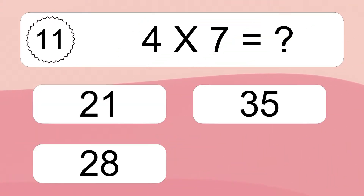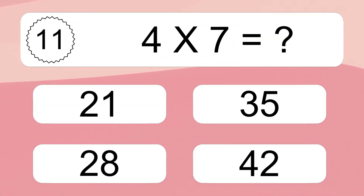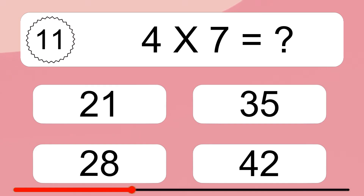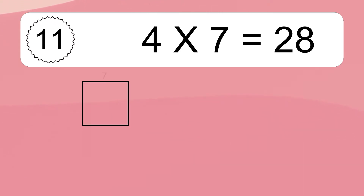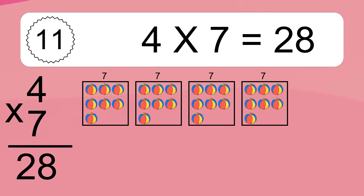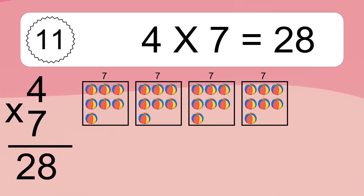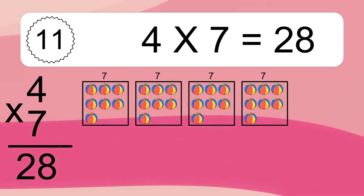4 times 7 equals what? 4 times 7 equals 28. We have 4 boxes and each box has 7 colorful balls inside. If you count all the balls in all the boxes together, you will have 4 times 7 balls. This equals 28 balls.